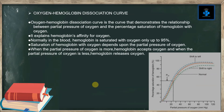The oxygen-hemoglobin dissociation curve is the curve that demonstrates the relationship between partial pressure of oxygen and percentage saturation of hemoglobin with oxygen. The y-axis shows the percentage saturation of hemoglobin, and the x-axis shows the partial pressure of oxygen in millimeters of mercury. The curve explains hemoglobin's affinity for oxygen.